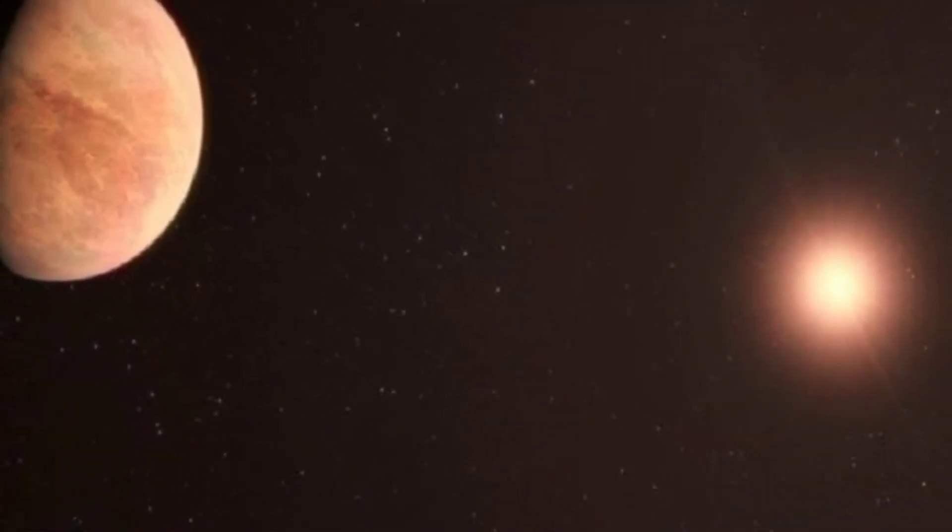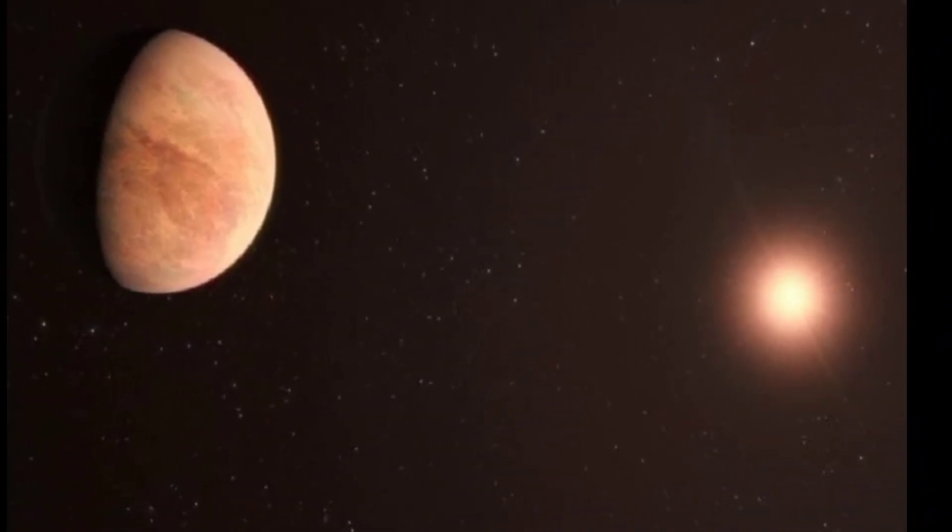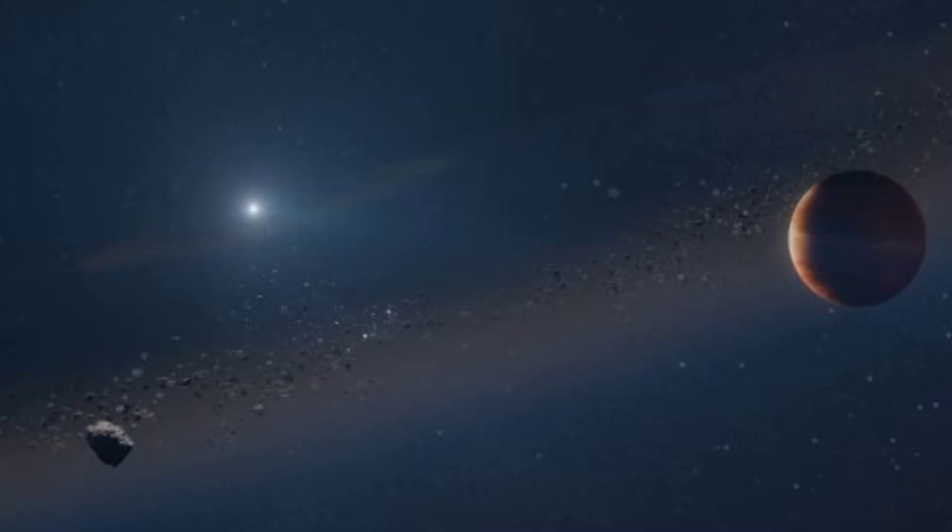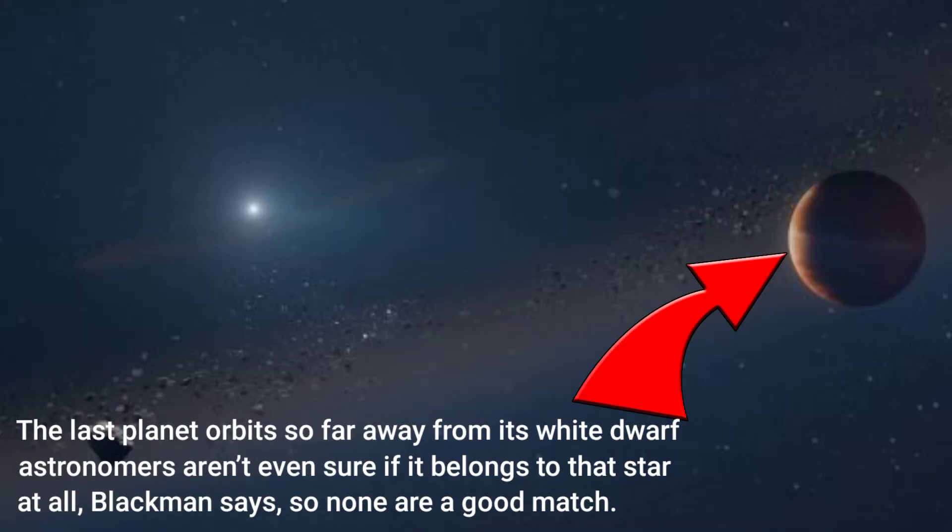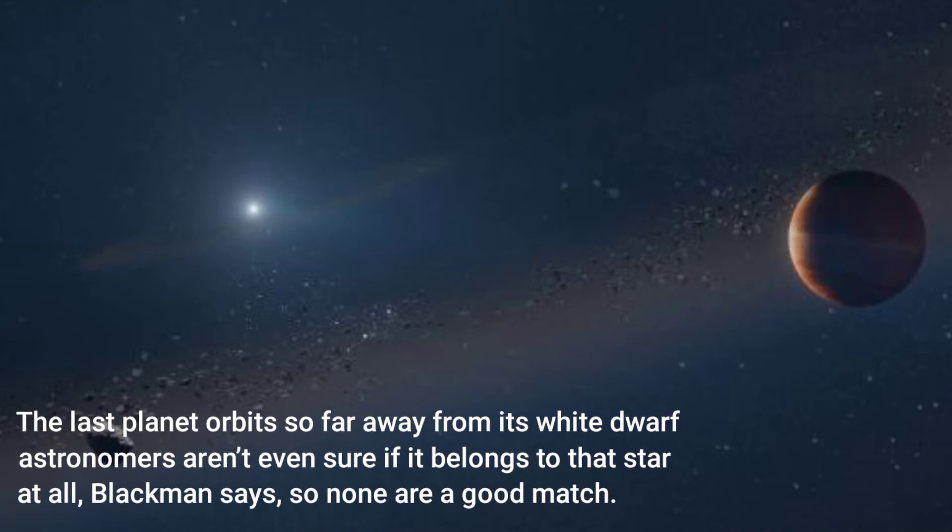Another exoplanet orbits a white dwarf and a pulsar, or pulsating neutron star. Cool, but not what's in our backyard. The last planet orbits so far away from its white dwarf astronomers aren't even sure if it belongs to that star at all, Blackman says, so none are a good match.